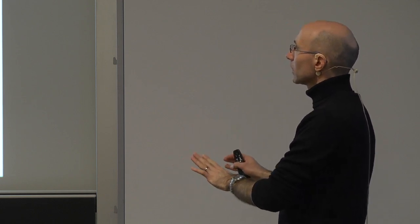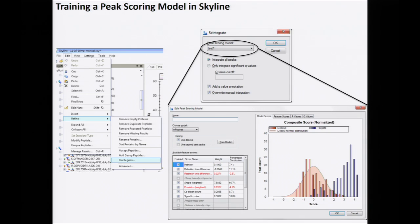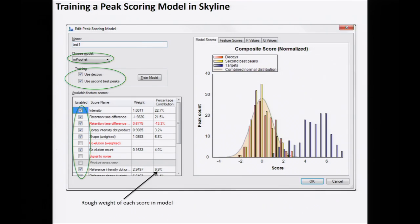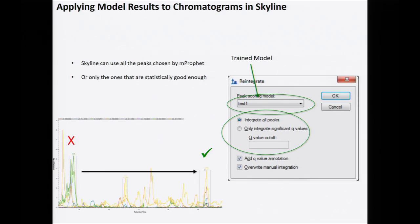Skyline now allows you to generate decoys directly within the program. You can indicate what type of decoys to generate, specify the model type, and it will produce the corresponding plots. You can look at distributions of targets and decoys, select which scores have the strongest power, deselect uninformative scores, examine histograms of individual and composite scores, and view p-value and q-value plots. You can then report only peaks that have a certain q-value threshold, quantifying only peaks with confident identification.